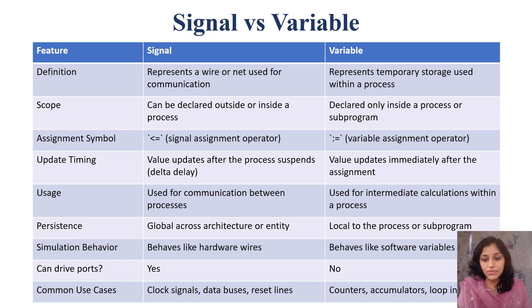The most important thing is in many times in exam questions are to differentiate signals and variables because both of them stores multiple values. Their values update and change after simulation. Their difference is very important. Very first is signal. The definition is it represents a wire or net used for communication, whereas variable represents temporary storage used within a process. Variable is temporary.